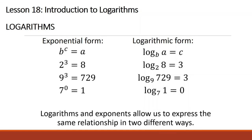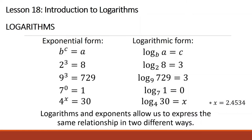Going back to 4 raised to x equals 30, how do we solve for x? We can convert it into logarithmic form, which gives us logarithm of 30 base 4 is equal to x. When we compute this on a calculator, x is equal to approximately 2.4534. So we were right — it is somewhere between 2 and 3.